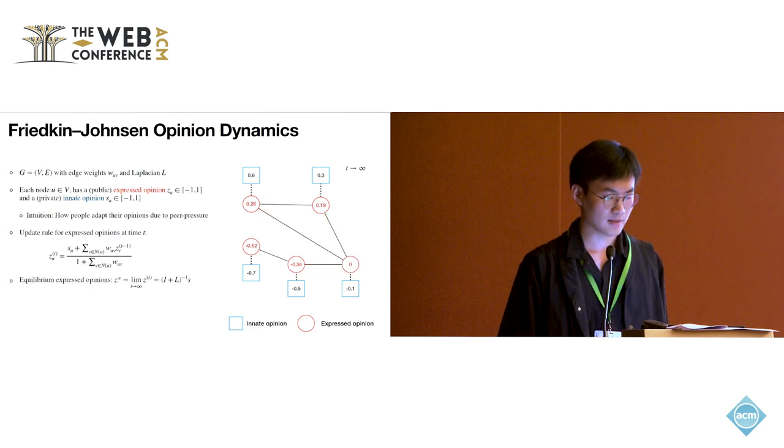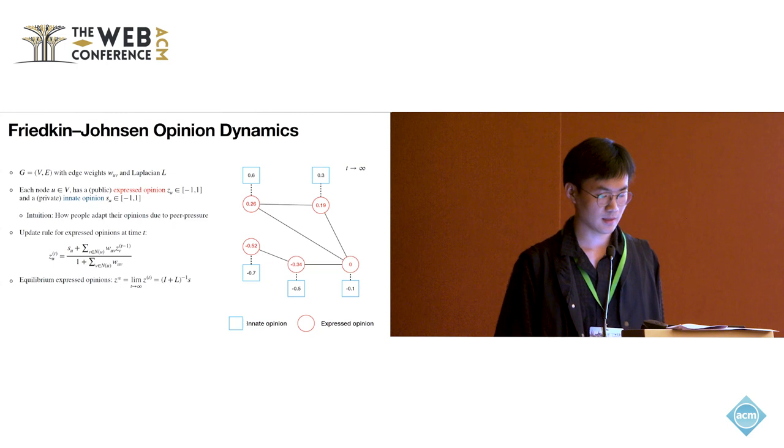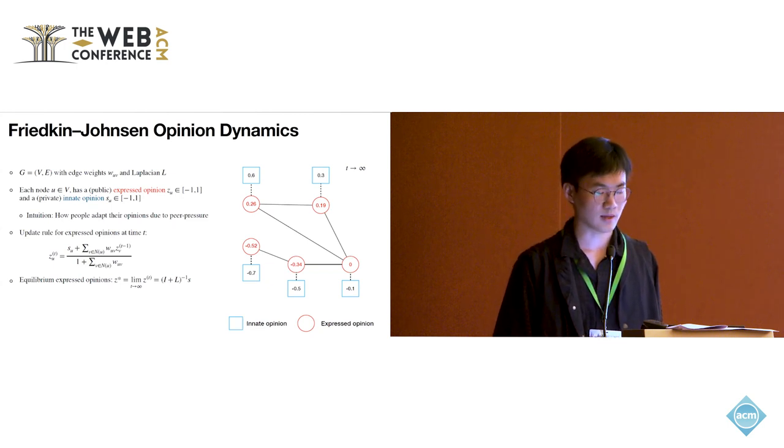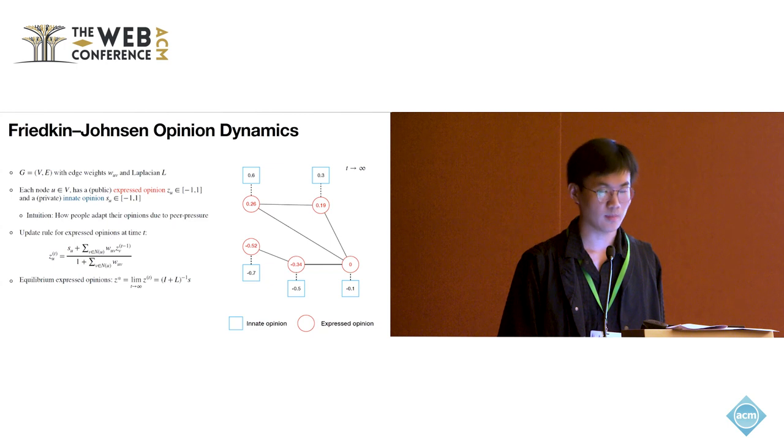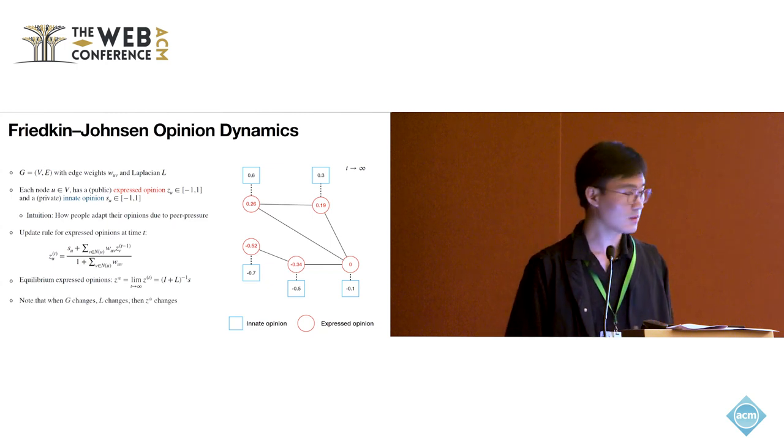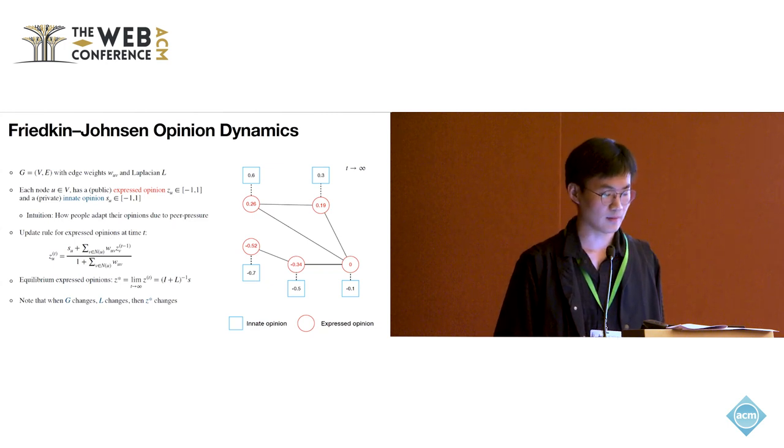At the end, following the update rule, the equilibrium would be reached, and the equilibrium expressed opinion z star equals I plus L inverse times innate opinion s. Note that if the graph structure changes, the Laplacian also changes and the equilibrium also changes.